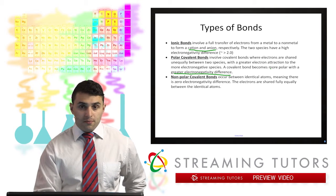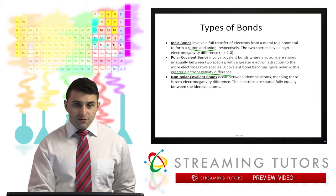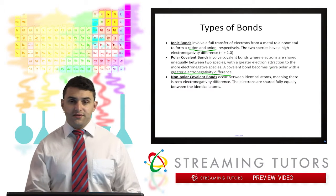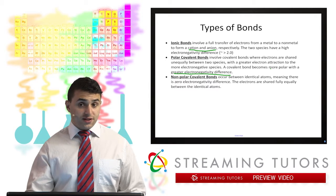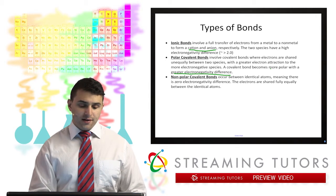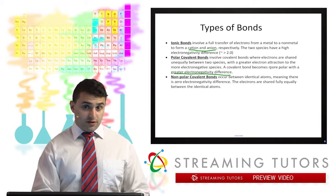And then finally, we have nonpolar covalent bonds, which is just bonds between identical atoms. So when that occurs, there's no electronegativity difference, and hence the electrons are completely and equally shared in between the two atoms in the bond. Okay, so those are the three kinds of general bonds we're going to be talking about in this course.